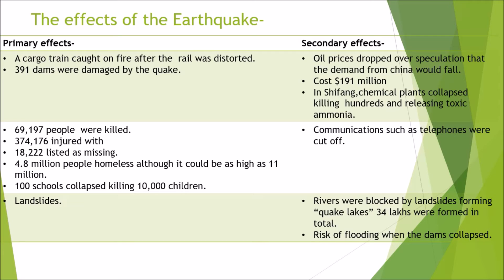Secondary effects were that oil prices dropped over speculation that demand from China would fall. It cost 191 million dollars. In Sichuan, chemical plants collapsed, killing hundreds and releasing toxic ammonia. Communications such as telephone were cut off, and rivers were blocked by landslides, forming quake lakes — 34 lakes were formed in total — with a risk of flooding when the dams collapsed.